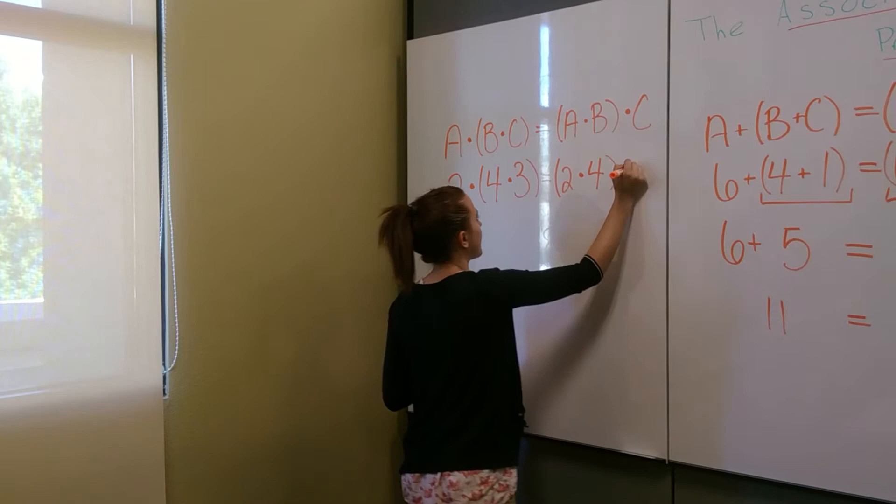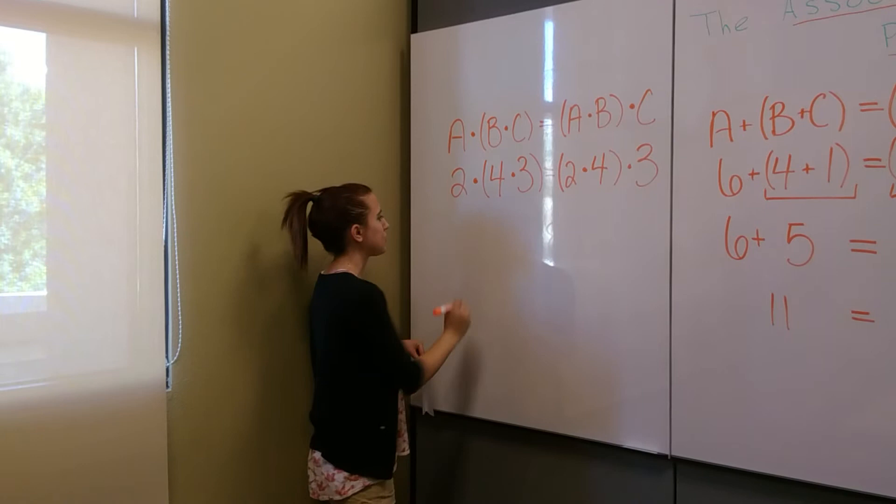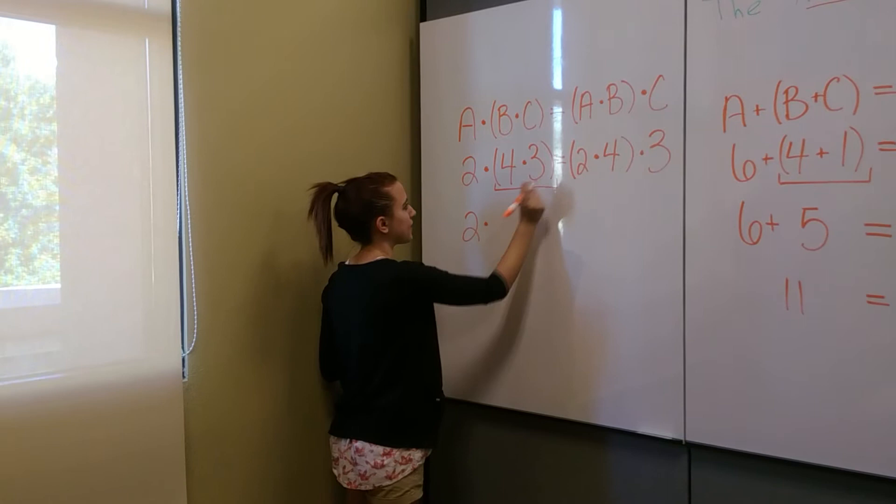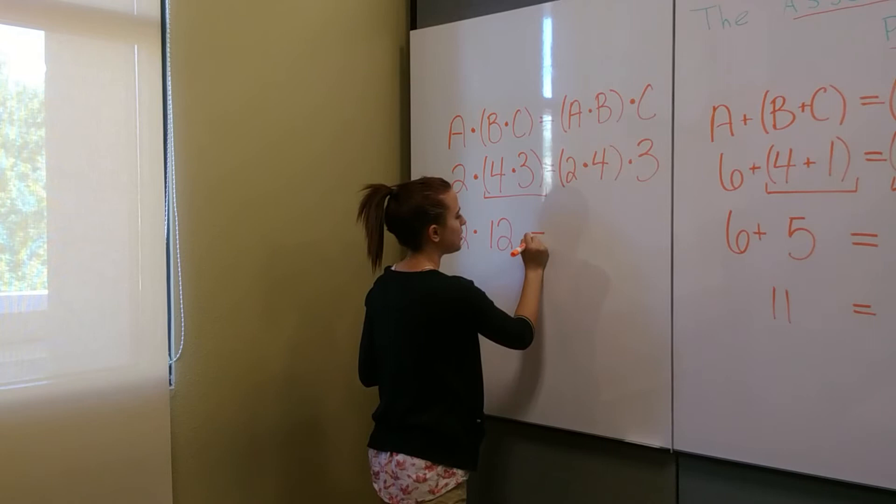And so if we do our order of operations, we start out with this 2 on that side. And then we do the parentheses. 4 times 3 is going to be equal to 12. And then we bring down our equal sign.